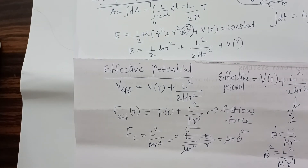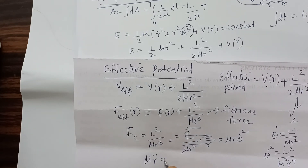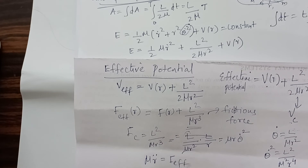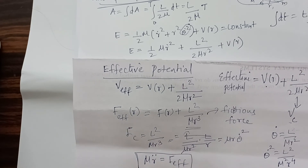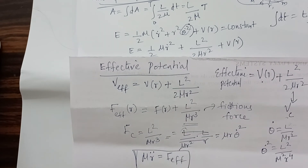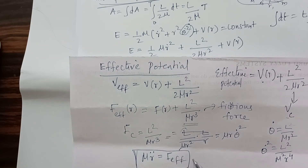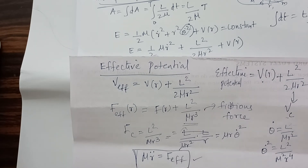Since L is a constant, this equation is identical to μr̈ = F_effective. The equation μr̈ = F_effective describes the motion of a particle of mass μ under the central force.